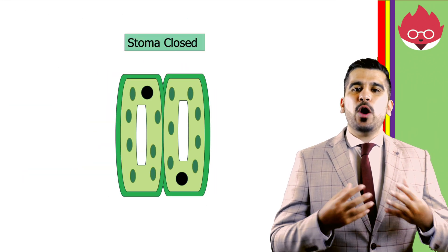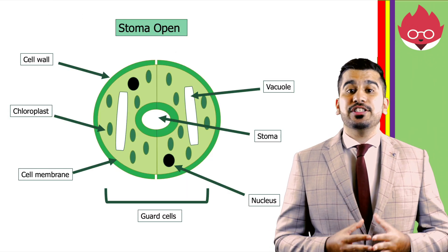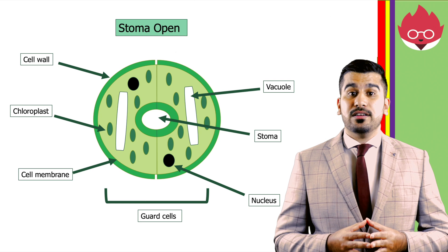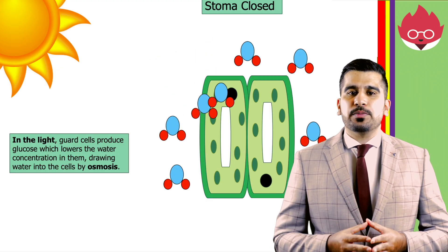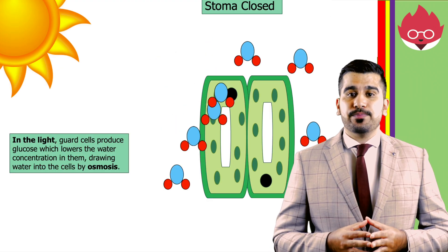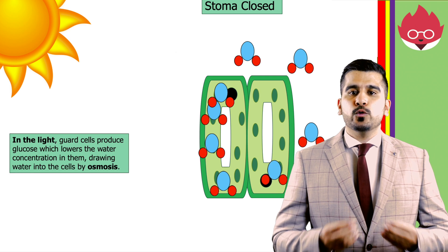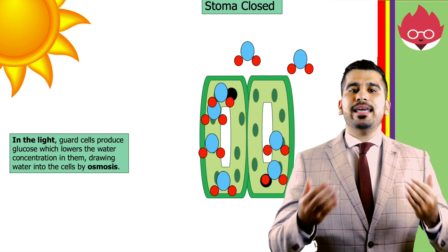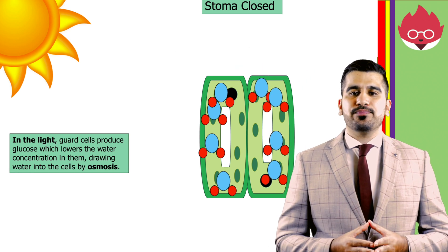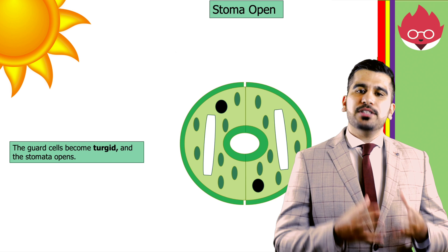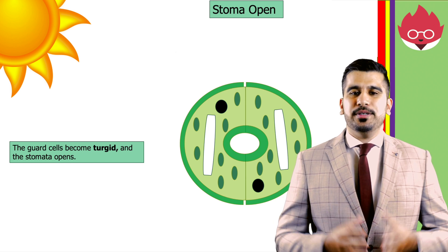Each stomata can be opened or closed depending on how turgid its guard cells are. In the light, these guard cells produce glucose, which lowers the water concentration in them, drawing water into the cells by osmosis. The guard cells become turgid and the stomata opens.